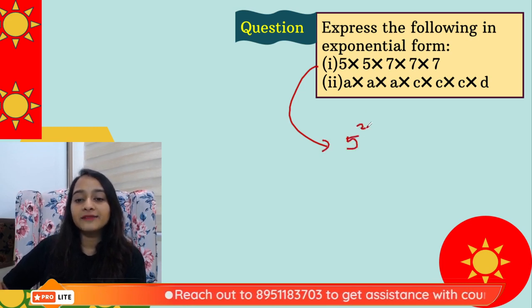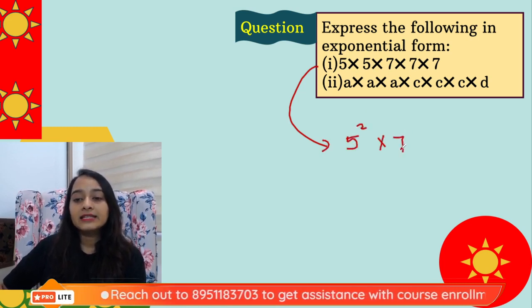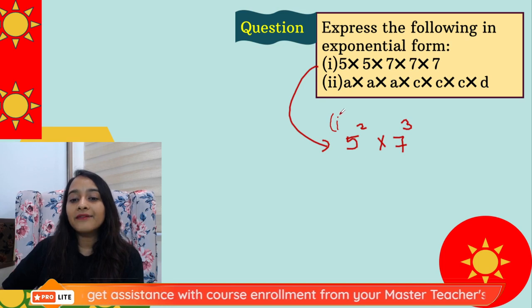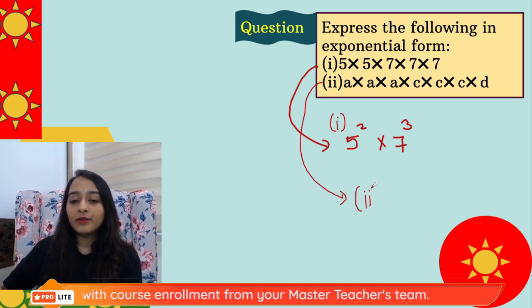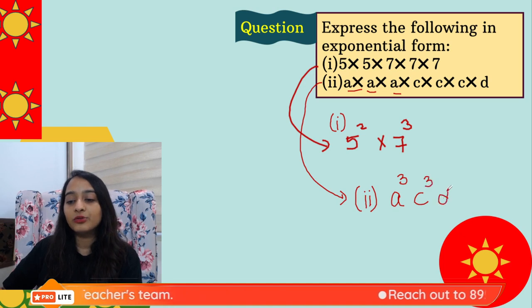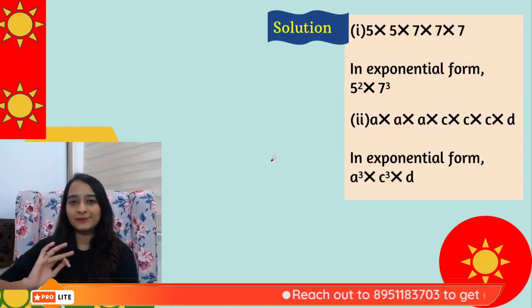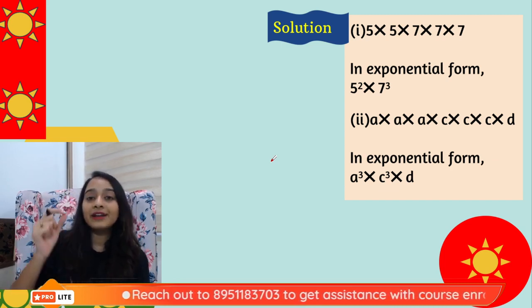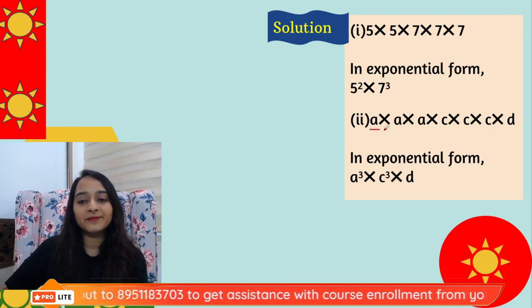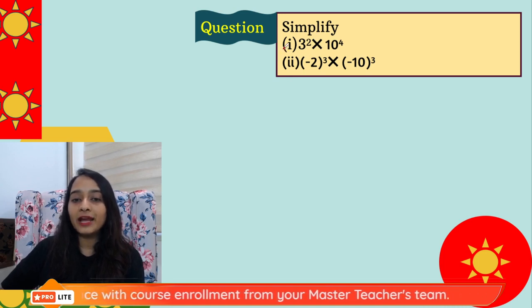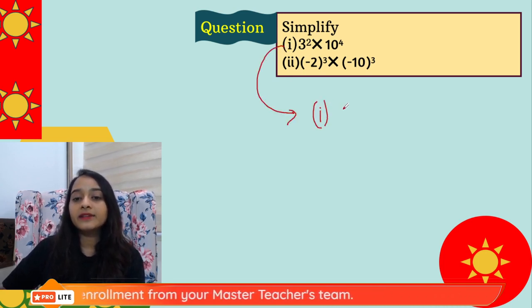Let's solve: express the following in exponential form. 5 is multiplied twice and 7 is multiplied 3 times, so the answer is 5² × 7³. For the second expression, a × a × a = a³, and c × c × c = c³, giving a³c³d. The number of times a number multiplies with itself defines the power, and the number itself becomes the base.